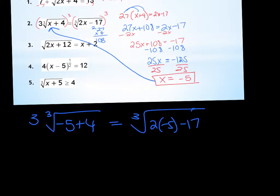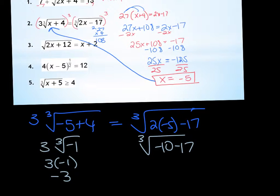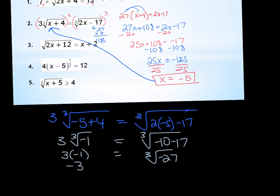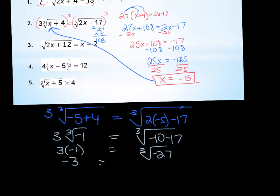Cube root of negative 1. What number times itself 3 times gives you negative 1? Negative 1. So this is 3 times negative 1, which is negative 3. And on the right, cube root of negative 10 minus 17, cube root of negative 27, which is negative 3. So again, checking to make sure that it's right, and I get the right answer. Questions on that one?